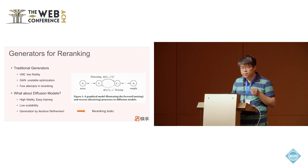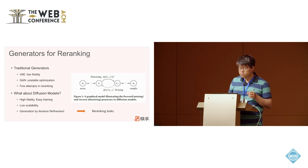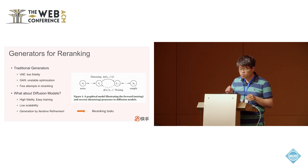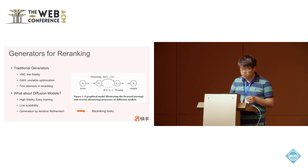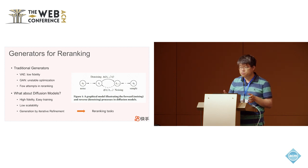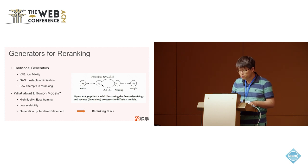Because even in the best recommender systems, we still don't know if the recommendation is already optimal for users — we cannot find the ground truth. Therefore, the idea of iterative refinement might be a good choice, because we don't know what the best sequence looks like, but we can always try to improve from the current recommendation.